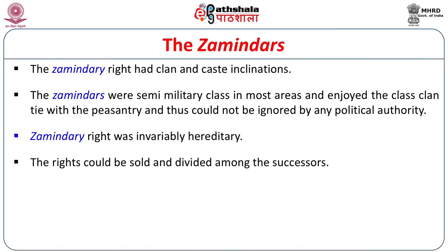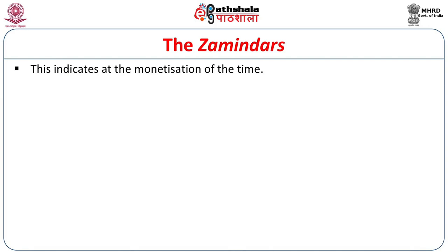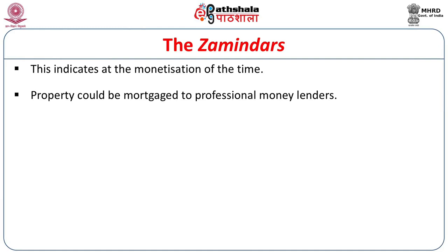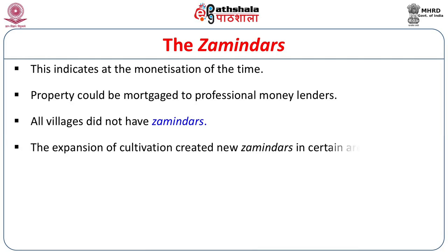The right could be sold and divided among successors, indicating the monetization of the time. Property could be mortgaged to professional money lenders. Not all villages had zamindars. The expansion of cultivation created new zamindars in certain areas, where local leaders who could control the peasants became zamindars. This is basically the difference between the jagirdar and the zamindar.